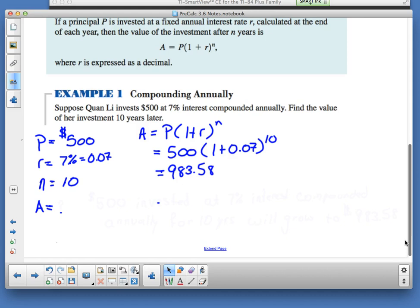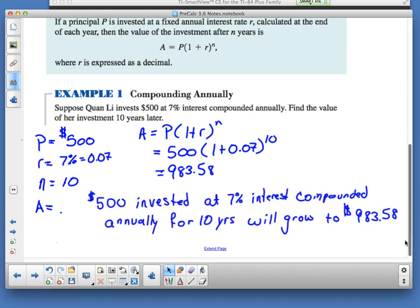$500 will become $983.58. That's at 7%. It's almost double. 7 times 10 is 70, not 72. If I had it a little bit longer, it would have doubled. $500 invested at 7% interest compounded annually for 10 years will grow to $983. Are there any questions about it? That's a straight-up formula.